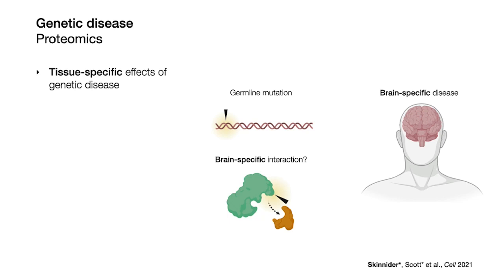The challenge is that to test this kind of hypothesis, you would need a method to systematically map protein-protein interactions in the brain, and this had never been done before. The most widely used methods to map protein interaction networks take place in genetically modified cell lines or in heterologous expression systems in yeast.